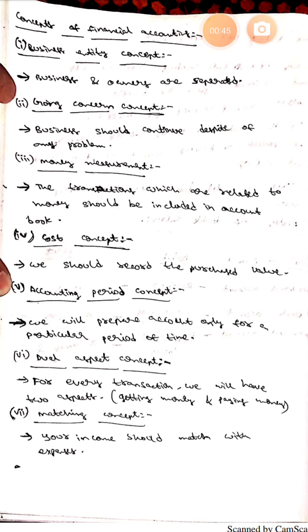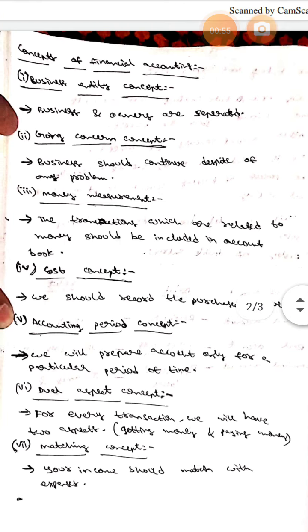One is getting money and another one is paying money. The seventh one is matching concept. Here your income should match the expenses. This is all about the concepts of financial accounting. I hope you understand guys.